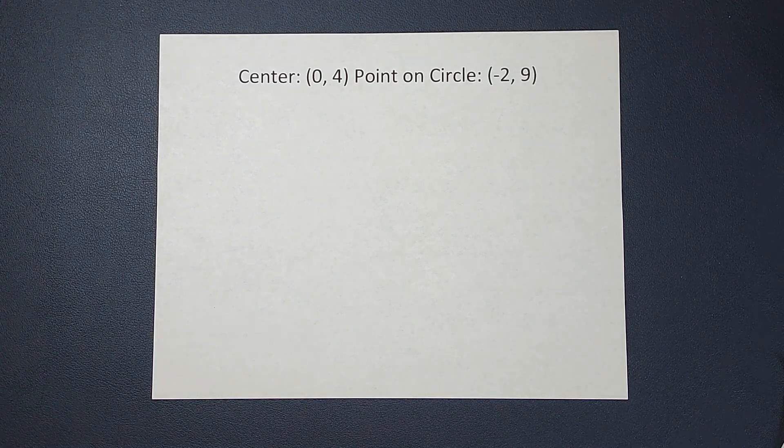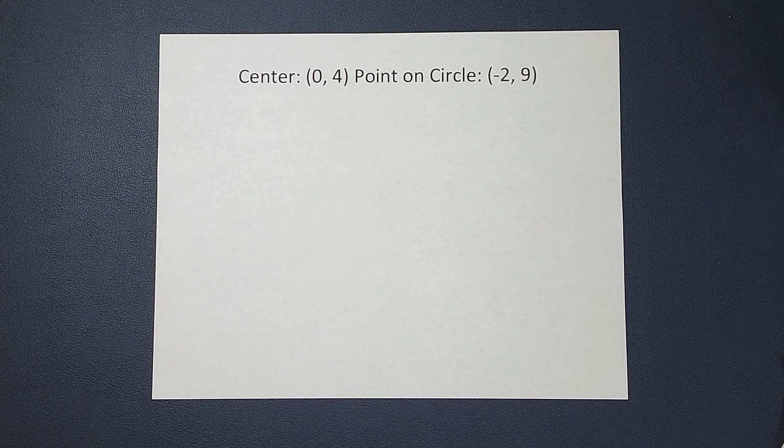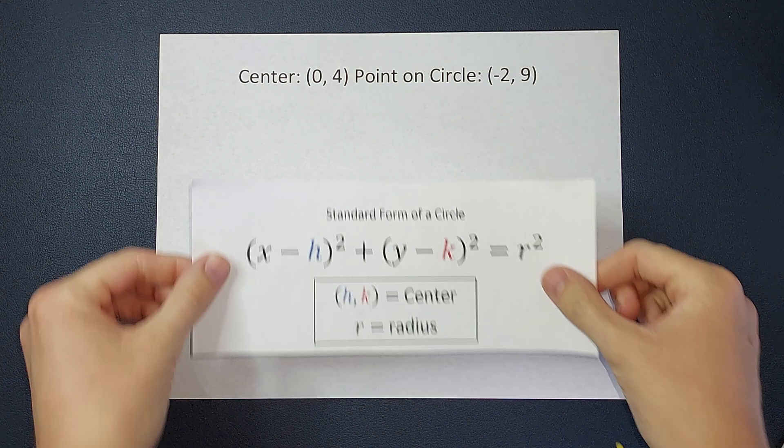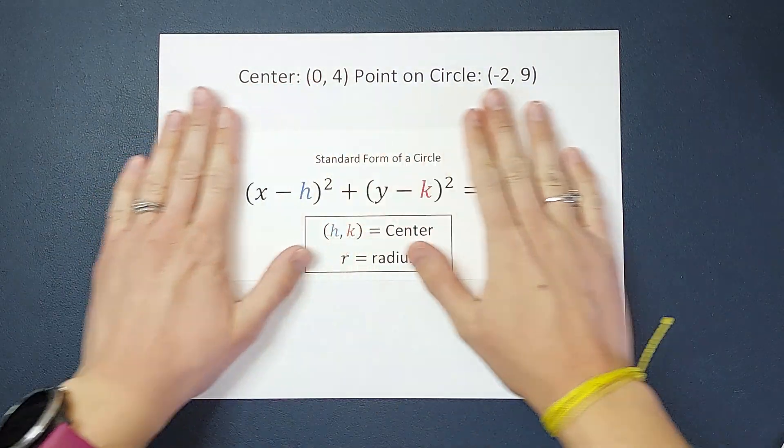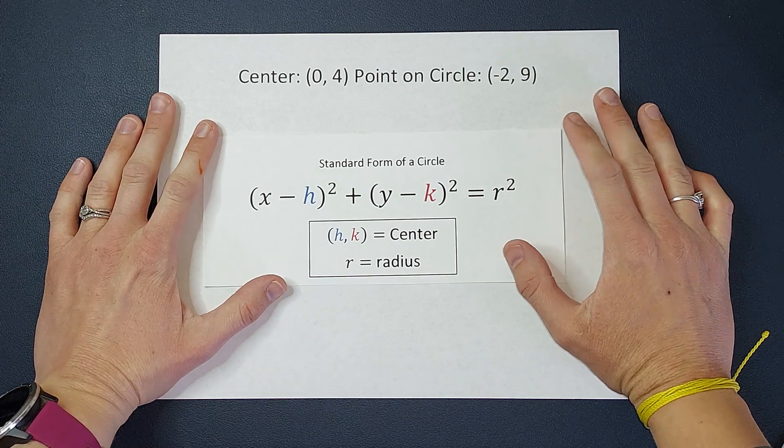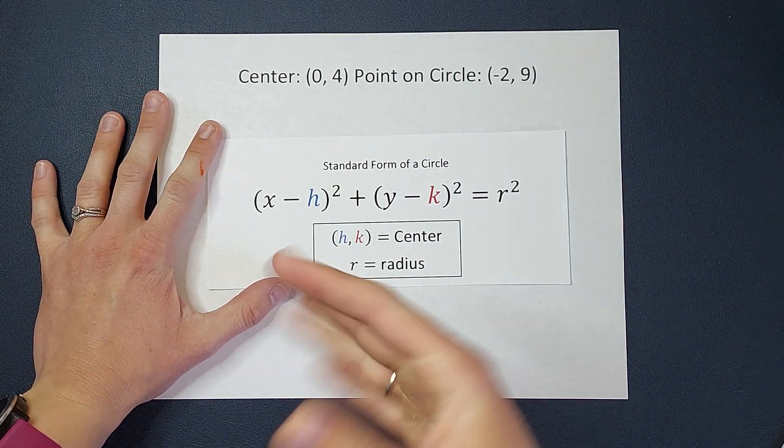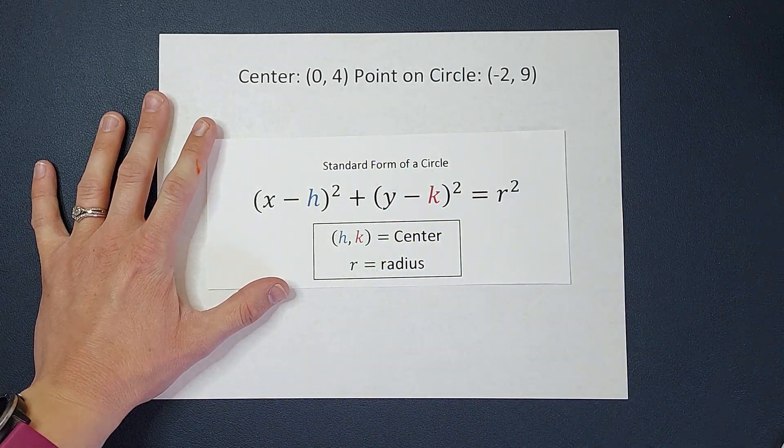Hey guys, we have been given the center point of a circle and a point on that circle, and we want to figure out what the equation for that circle is. So we are going to use the standard form of a circle. I probably just said circle like 15 times. You're welcome. So you're probably familiar with this. If we know our center and our radius, this is super easy to fill in and get our equation.